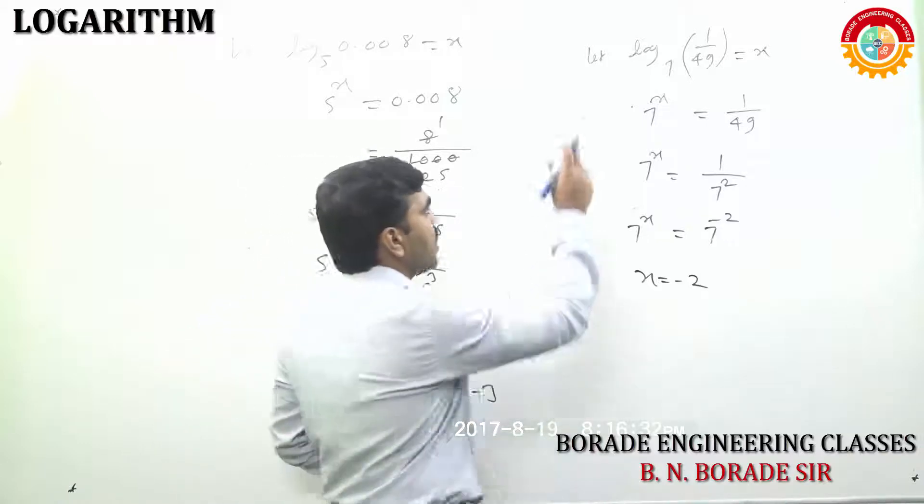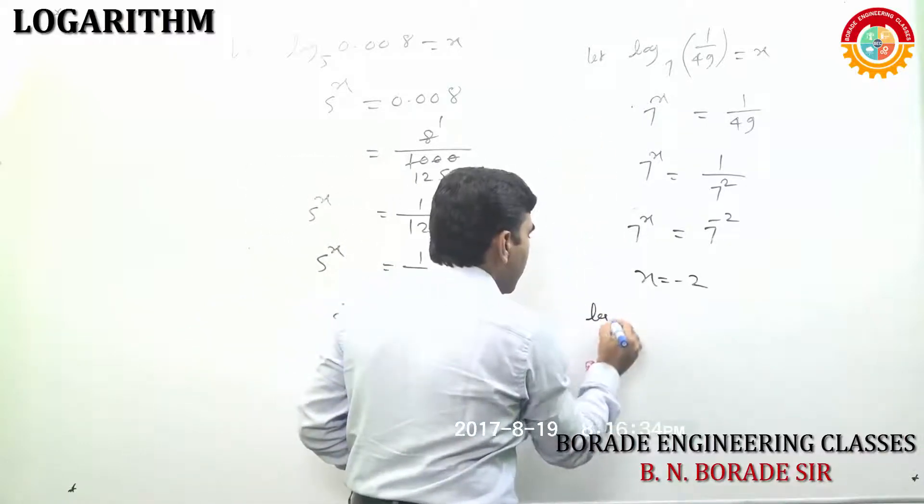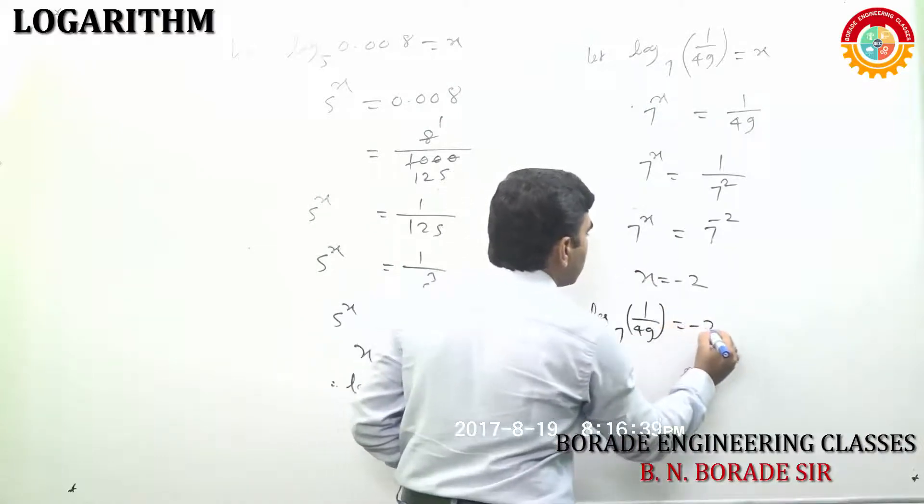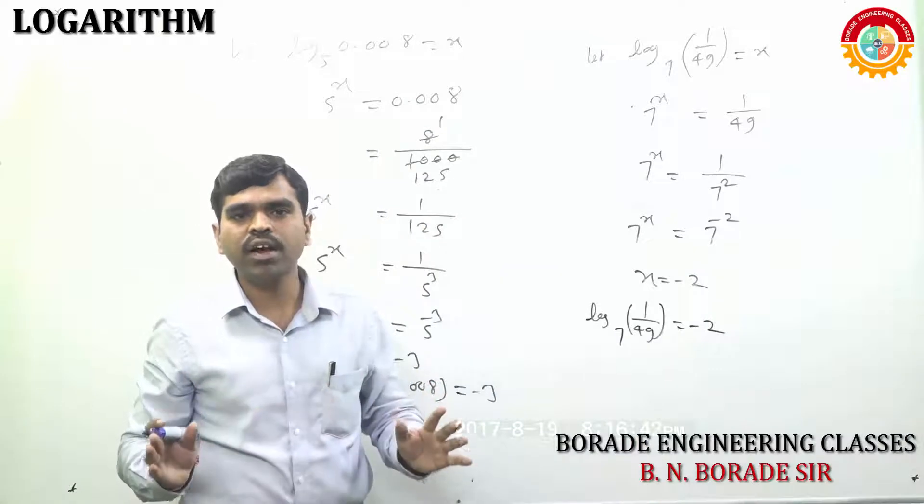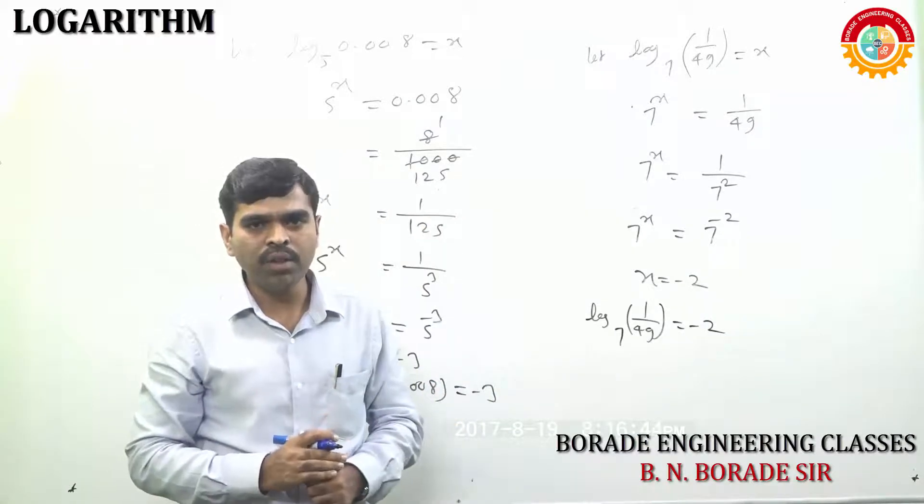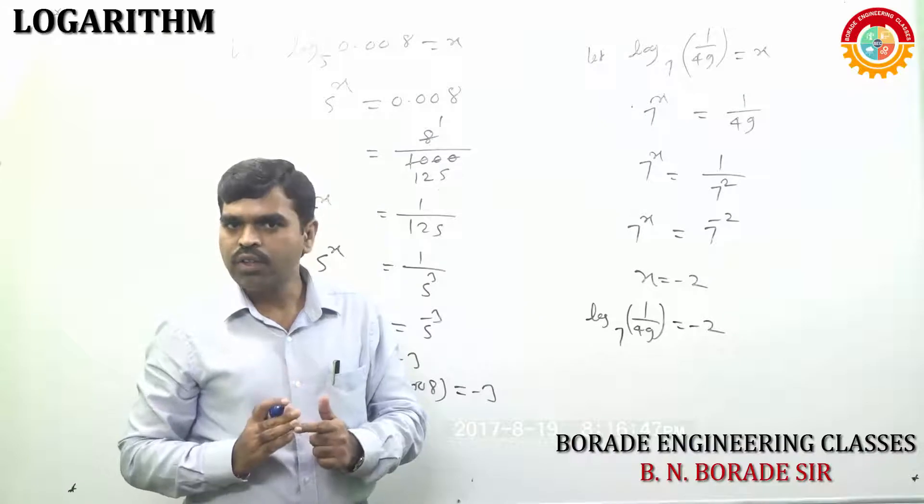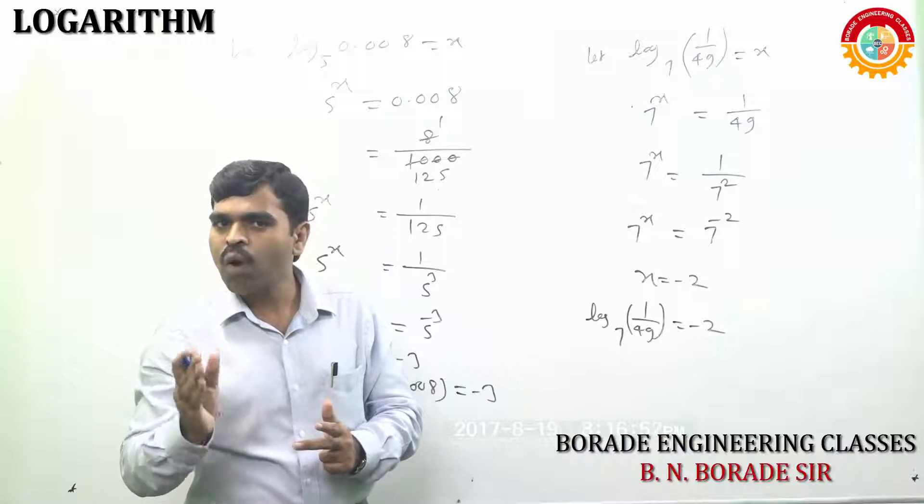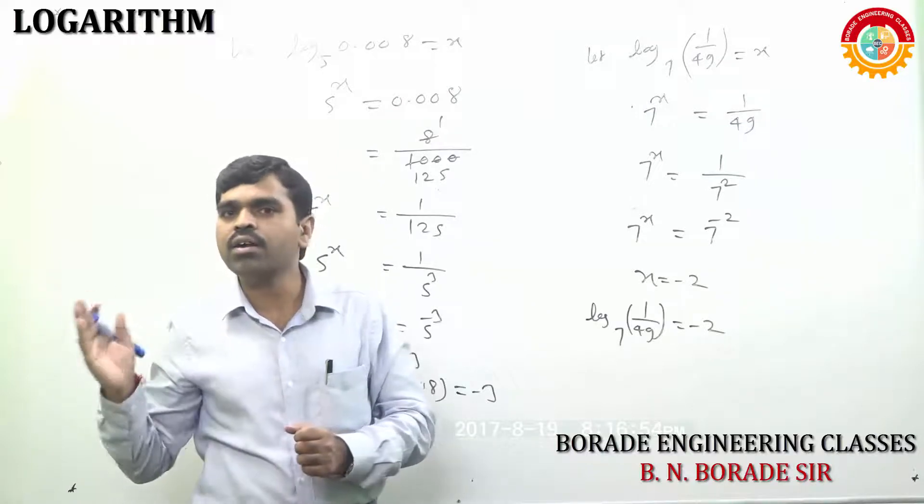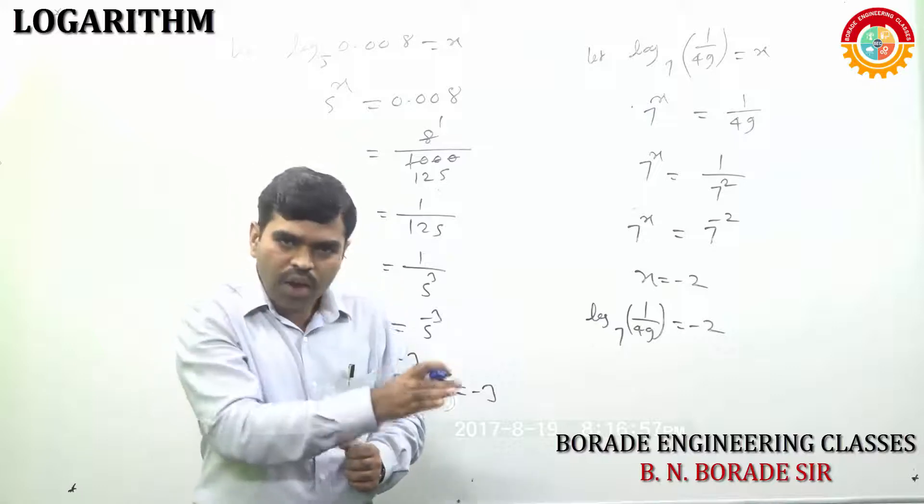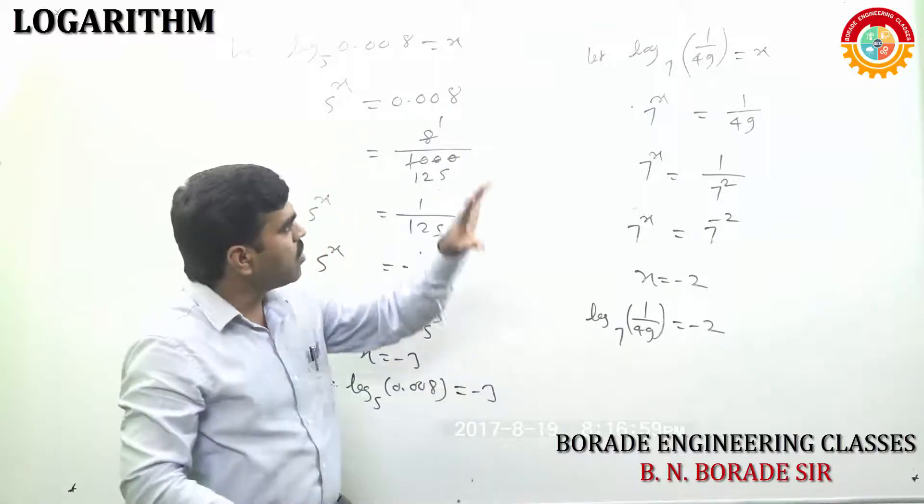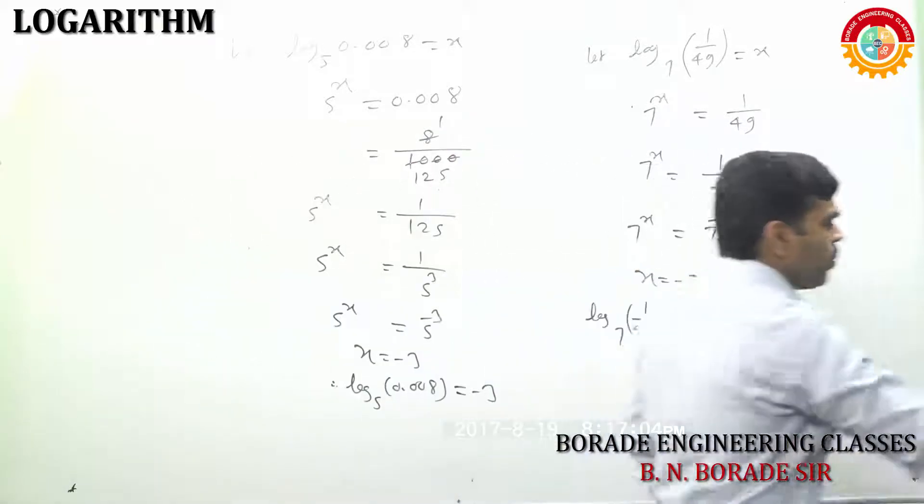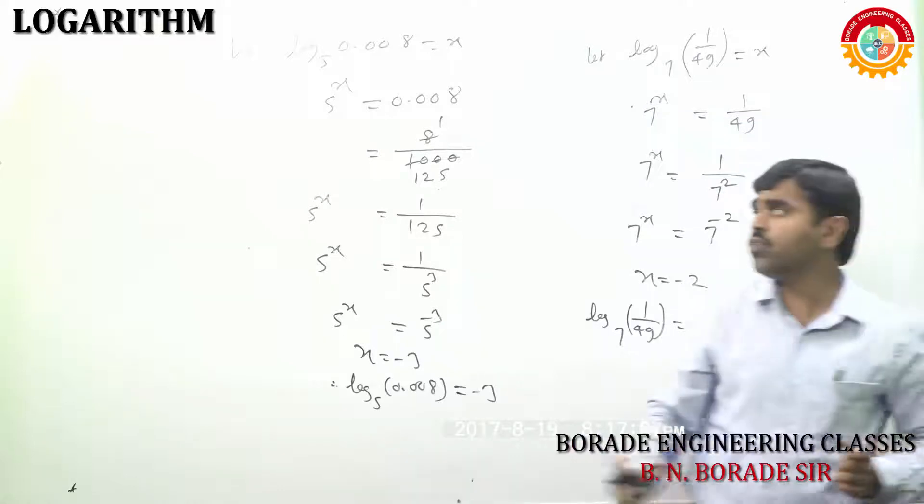Ya aap la kaas na re answer. Finally, we can write log of 1 upon 49 to the base 7 equal to minus 2. Kae kae bagitla aata aparantha akon? Definition of log. Then two properties: log of 1 to the base a is 0, log of a to the base a is 1. And after that, conversion of exponential to logarithmic, logarithmic to exponential. And how to find out value of given log. Before going to further, laws of logarithms.